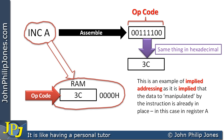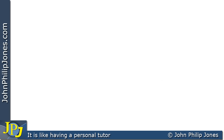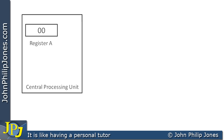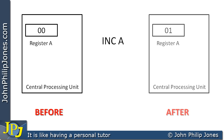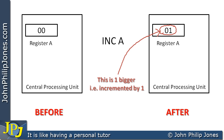The data is already inside the central processing unit in register A. Looking at the execution of this instruction: before execution, register A contains 00 in hexadecimal — that is eight bits, all zero. When the increment instruction executes, it takes the current contents of register A, which is 00, and makes it one bigger. After execution, register A contains 01. Increment A has added one to the register's contents, which would take place inside the CPU using the arithmetic and logic unit.